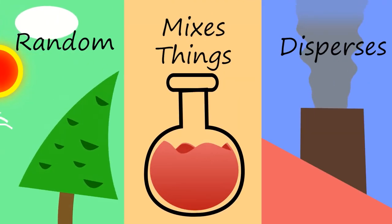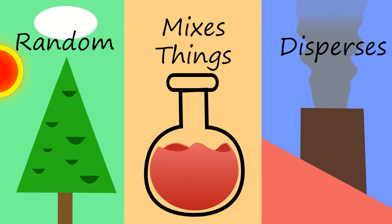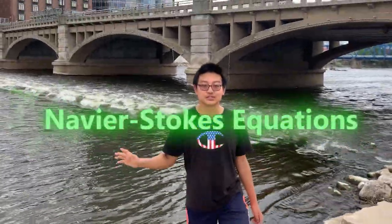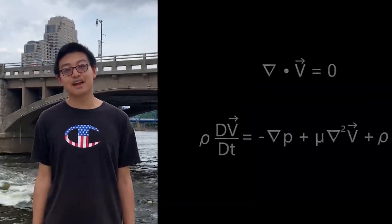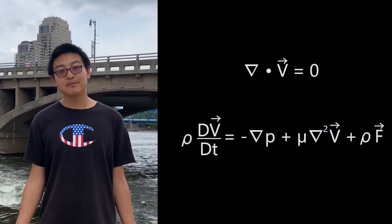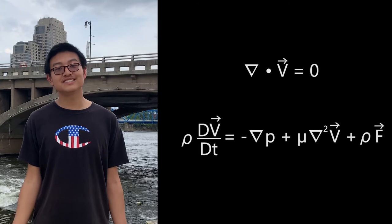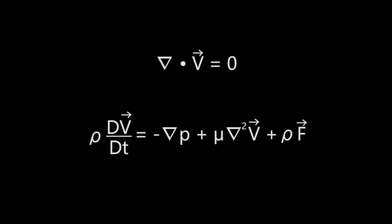Turbulence puzzles scientists to this day and makes the modeling of fluid flow more difficult. Traditionally, physicists use the Navier-Stokes equations to model and predict the flow of fluid. Two equations make up the Navier-Stokes equations. While complicated looking, these are actually simple, fundamental equations you know.